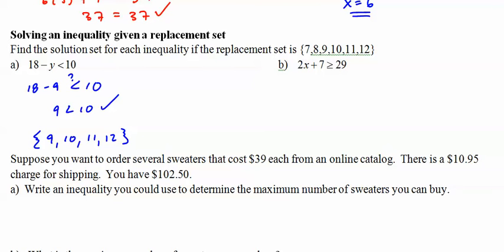So again, over here, we have another inequality. 2x plus 7 greater than or equal to 29. Let's try 11. 2 times 11 plus 7 greater than or equal to 29, question mark. 22 plus 7 is 29. And notice we have an equal here. So this one actually works. And any number greater than 11 will work. So our solution set is 11 and 12.